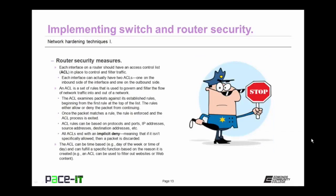Let's move on to router security measures. Each interface on a router should have an access control list, or ACL, in place to control and filter traffic. Each interface can have two ACLs — one on the inbound side and one on the outbound side. An ACL is a set of rules used to govern and filter the flow of network traffic into and out of a network. The ACL examines packets against its established rules, beginning from the first rule at the top and continuing down. The rules either allow or deny the packet from continuing. Once a packet matches a rule, the rule is enforced and the ACL process is exited.